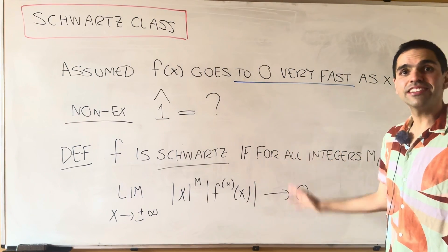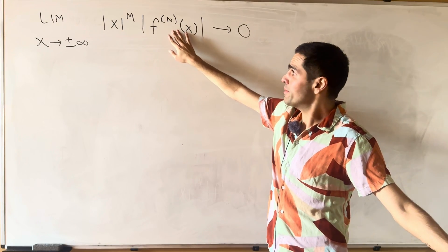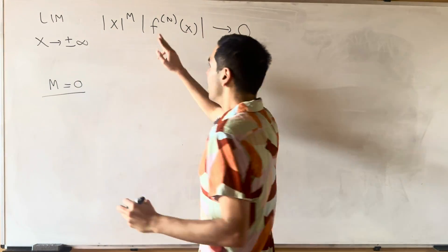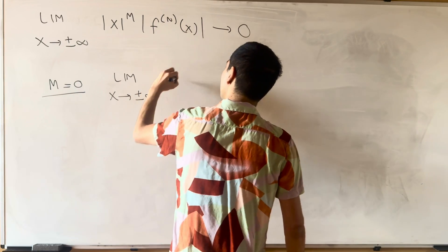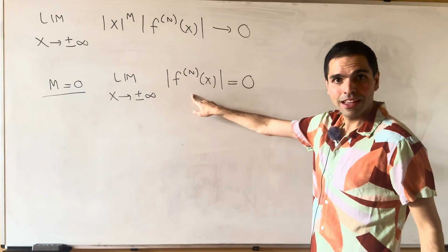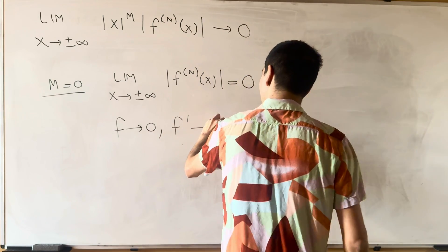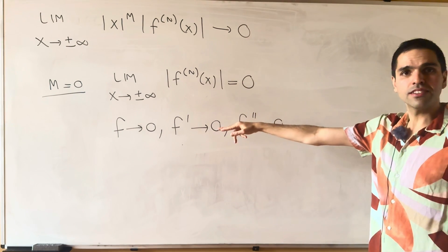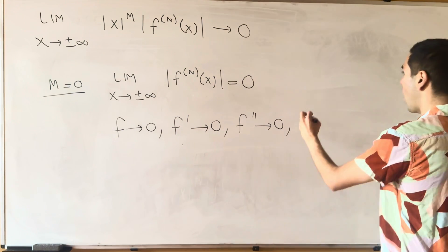And I want to elucidate this a little bit to see what's going on. So let's just take the extreme cases, assume first of all m is zero. Then what this is telling us is the limit as x goes to plus or minus infinity of f to the nth of x is zero. Meaning that f goes to zero, f prime goes to zero, f double prime goes to zero, et cetera. So not only does f go to zero as x goes to plus or minus infinity, but so do all its derivatives.